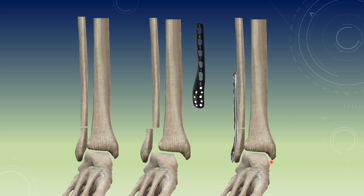Sometimes the medial side tendons like FHL and tibialis posterior tendon can also get entrapped in this area after the injury. Therefore if the mortise is not uniform even after fixation of the fibula and placement of the syndesmotic screw, you need to open it up to look for any ligament or tendon lying in this area. Once that is done, you have to replace the syndesmotic screw and restore the ankle mortise.